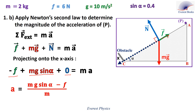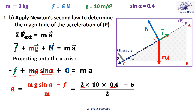Replace each physical quantity by its value: M equals 2 kilograms, g equals 10 meters per second squared, sine alpha equals 0.4, and the friction equals 6 newtons. Then A equals 1 meter per second squared.